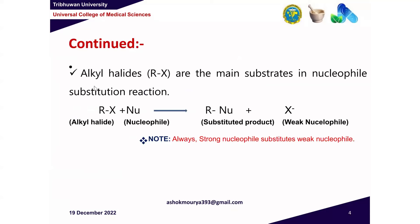Alkyl halides are the major substrate in nucleophilic substitution reactions. The halide X is the leaving group and will be removed — it is the weak nucleophile. The strong nucleophile displaces X, giving the substituted product RNu. Strong nucleophiles, which are strong bases and negatively charged species, always substitute weak nucleophiles.